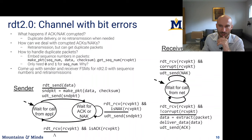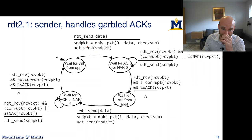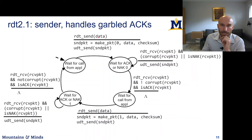This is the sender implementation which handles garbled acknowledgements. The first thing is that data arrives from the application layer — someone called rdt_send. The sender will make a packet and assign it sequence number zero, take the data that was passed in, create a checksum for it, and that creates the packet. Now that packet is sent using udt_send.